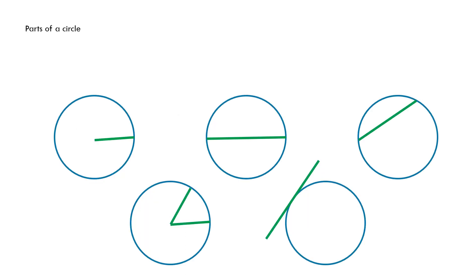The first set of questions is on parts of a circle. I've got a green line here going from the center of the circle to the edge, or the circumference, and that is the radius. The length of the perimeter of the circle is known as the circumference.